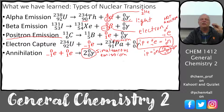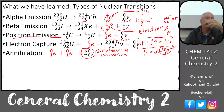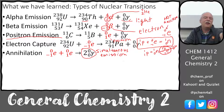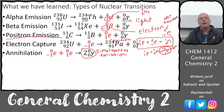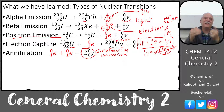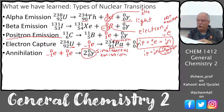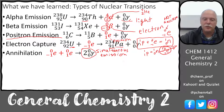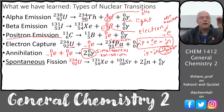Electron capture is another nuclear transformation. For large atoms like uranium, the 1s electrons are very close to the nucleus. There's a non-zero probability that an electron gets sucked into the nucleus, converting a proton into a neutron. The element moves one spot left on the periodic table — uranium would become protactinium.